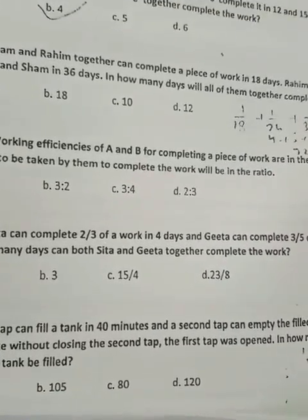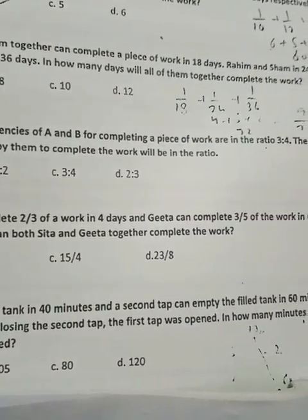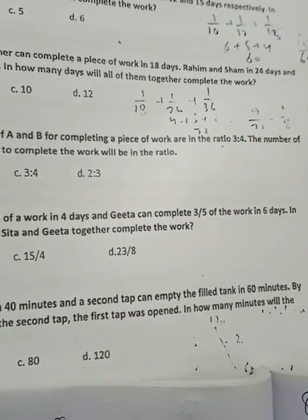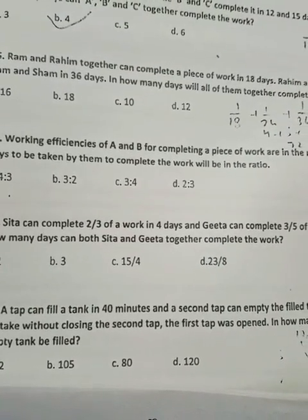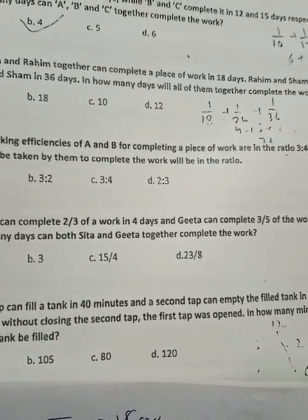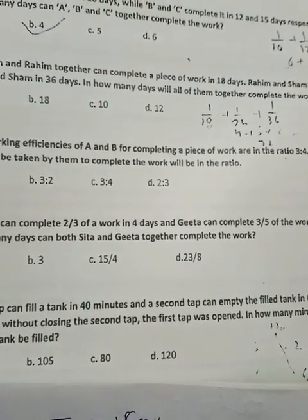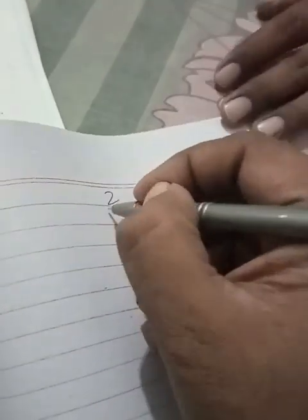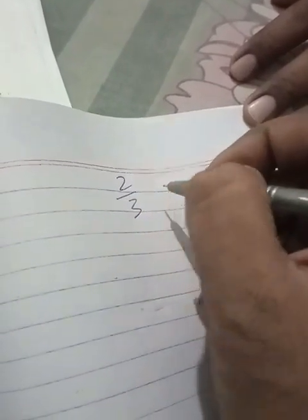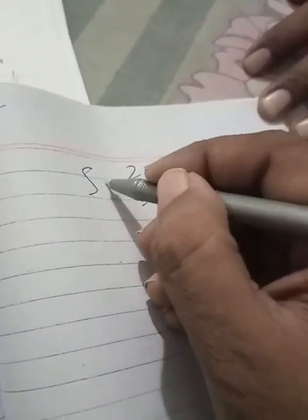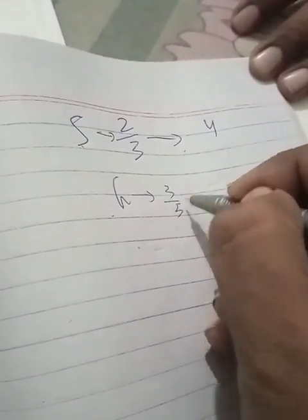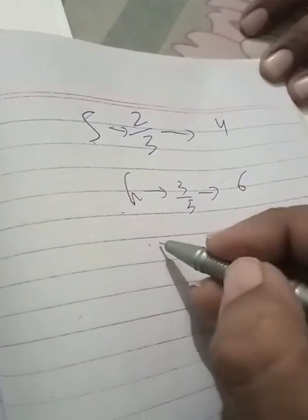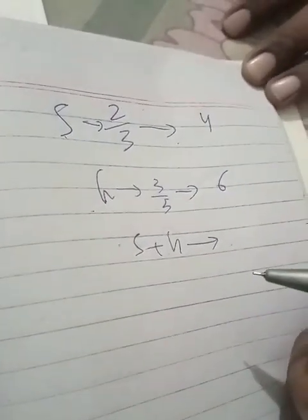Sita can complete 2 upon 3 of work in 4 days and Gita can complete 3 upon 5 of work in 6 days. In how many days can both Sita and Gita together complete the work? 2 upon 3 work Sita ne kiya kitne din mein? 4 days mein. And Gita ne 3 upon 5 work 6 days. So Sita and Gita mil kar kitne din mein karenge?